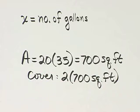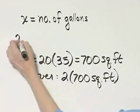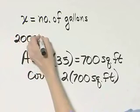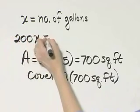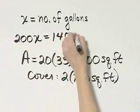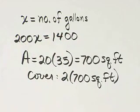We're given that a gallon covers 200 square feet. So, 200 square feet times the number of gallons—how many would equal a coverage of 1,400 square feet, the total coverage we want?